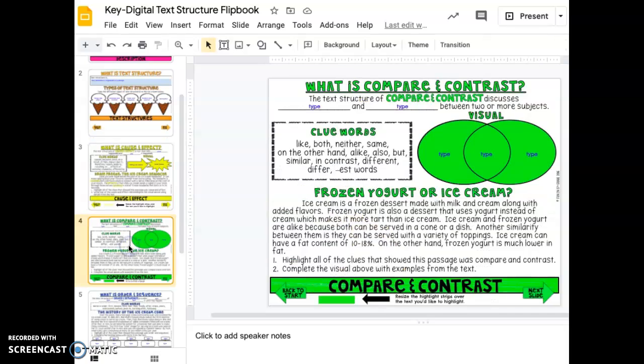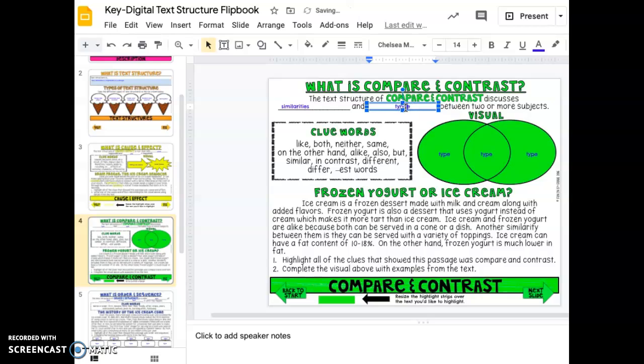Moving on to our next text structure: compare and contrast. The text structure of compare and contrast discusses similarities and differences between two or more subjects. Here are clue words like both, neither, same, on the other hand, alike, also, but, similar, in contrast, different, differ, and -est words. Let's take a look here. We're going to highlight all the clue words we find in this passage.